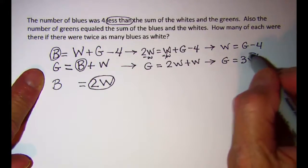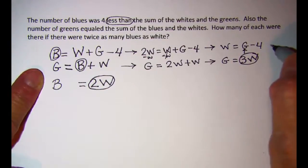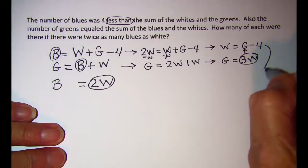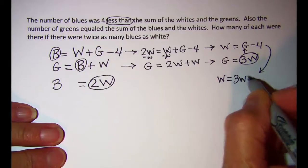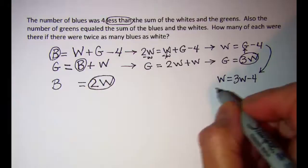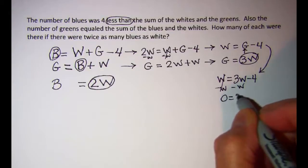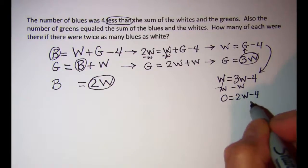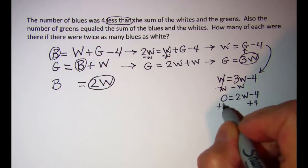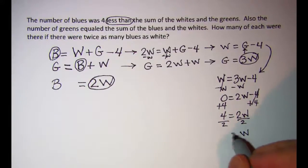And let's substitute this in up here for G. And so this equation becomes W equals 3W minus 4. Subtract W from both sides. So 0 equals 2W minus 4. Add 4 to both sides. So 4 equals 2W. Divide by 2. W equals 2.